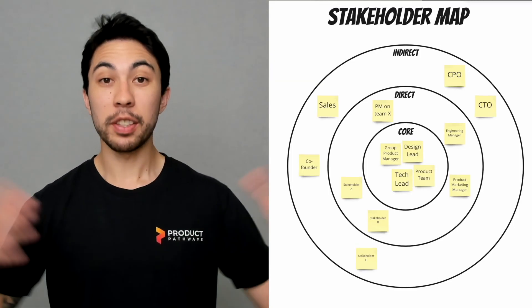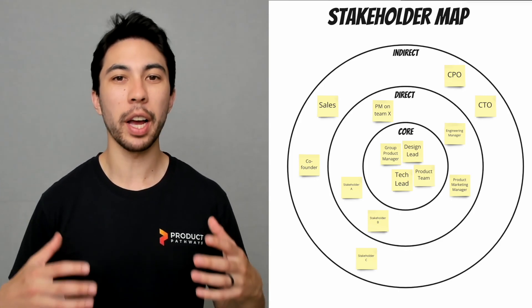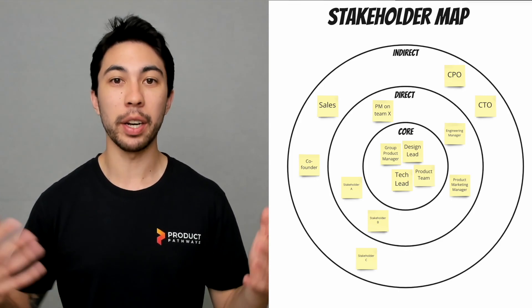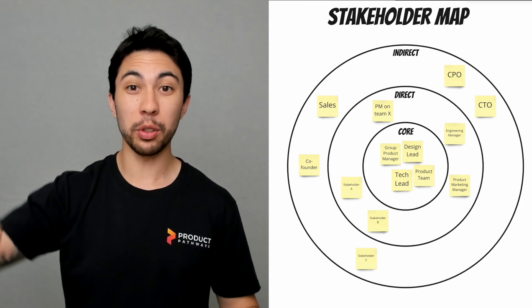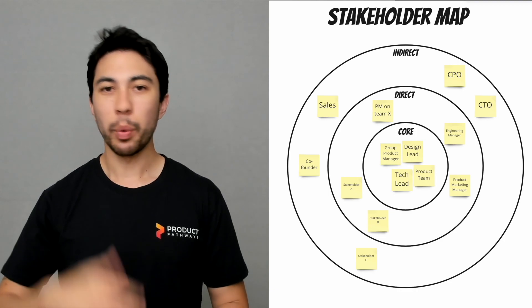One of my favorite stakeholder mapping tools is this framework. It's not too exhaustive and that's why I like it—it's easy, lightweight, and really quick to do. Draw three circles on a whiteboard or on a Miro board and away you go.